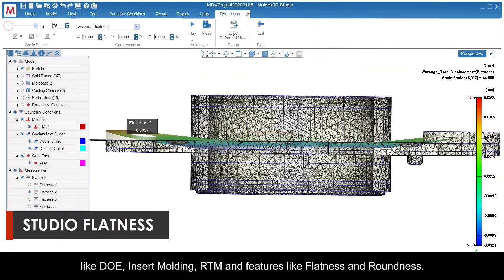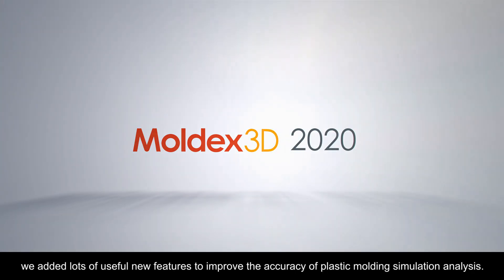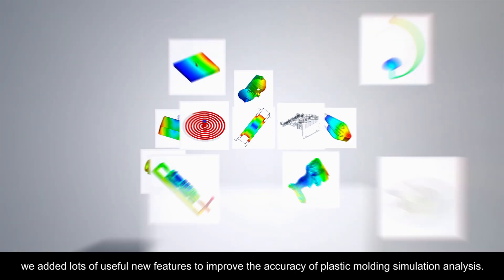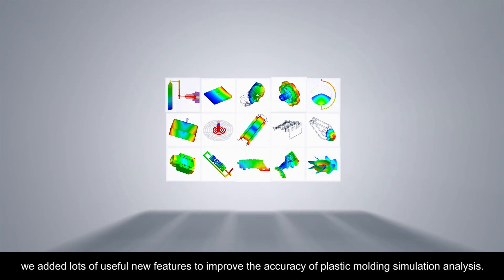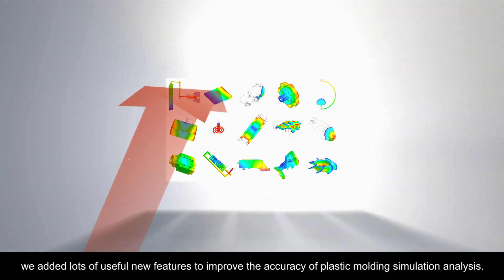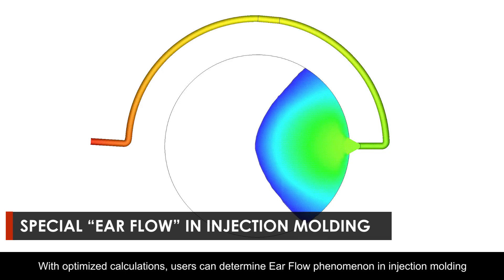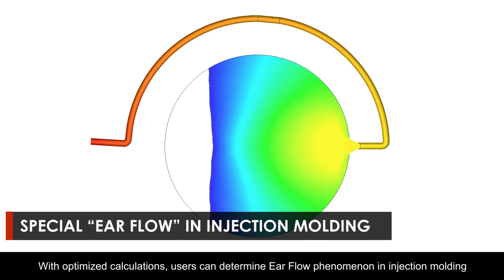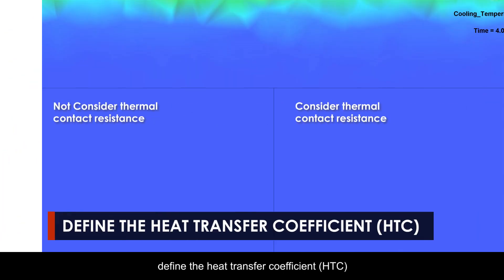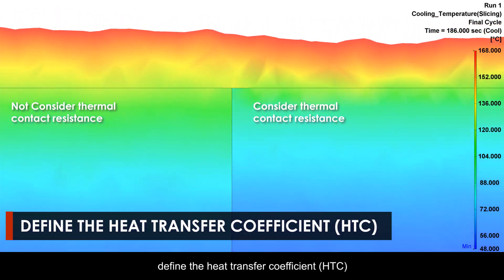With Moldex 3D 2020, we added lots of useful new features to improve the accuracy of plastic molding simulation analysis. With optimized calculations, users can determine airflow phenomenon in injection molding, define the heat transfer coefficient (HTC).